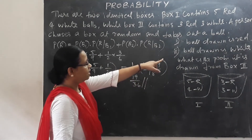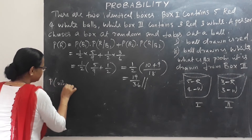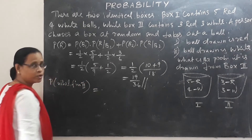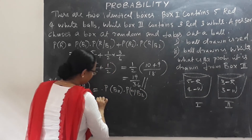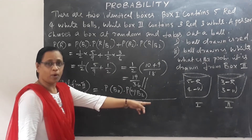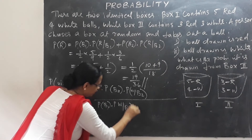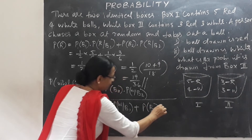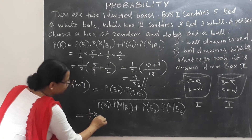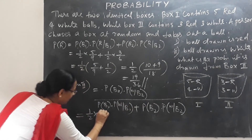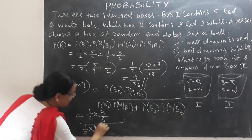For the second question, probability of bag 2 given white equals probability of bag 2 times probability of white given bag 2, divided by the total probability. The denominator uses: probability of bag 1 times probability of white given bag 1, plus probability of bag 2 times probability of white given bag 2. This is 1/2 × 3/6, divided by 1/2 × 4/9 plus 1/2 × 3/6.